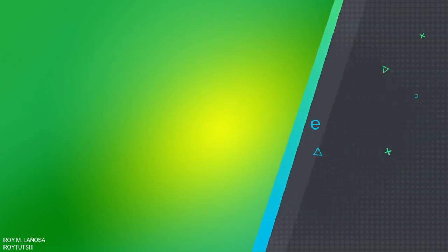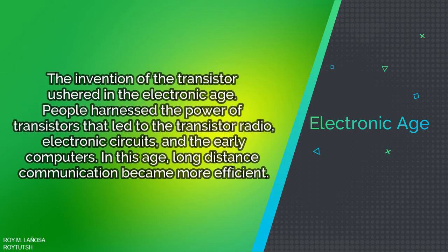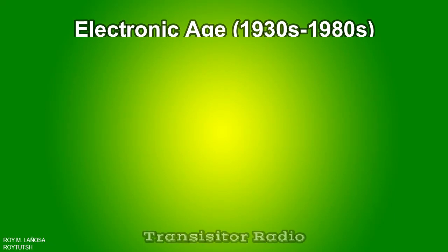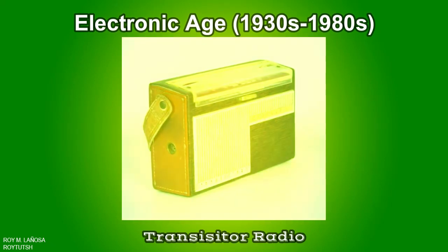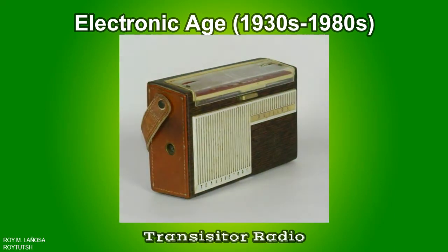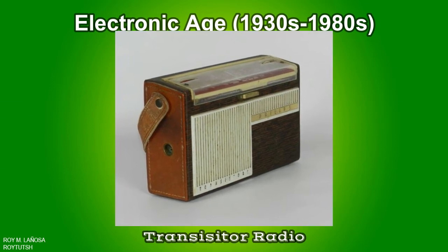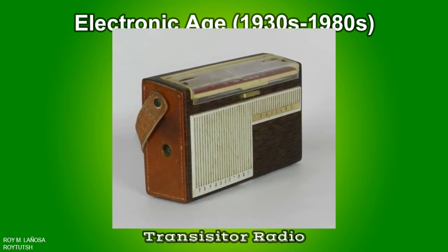Now let's proceed to the third phase: the Electronic Age. The invention of the transistor ushered in the Electronic Age. People harnessed the power of transistors, which led to the transistor radio, electronic circuits, and early computers. In this age, long-distance communications became more efficient. The transistor radio is a small portable radio receiver that uses transistor-based circuitry, following the invention of the transistor. The first commercial transistor radio was released in 1954.